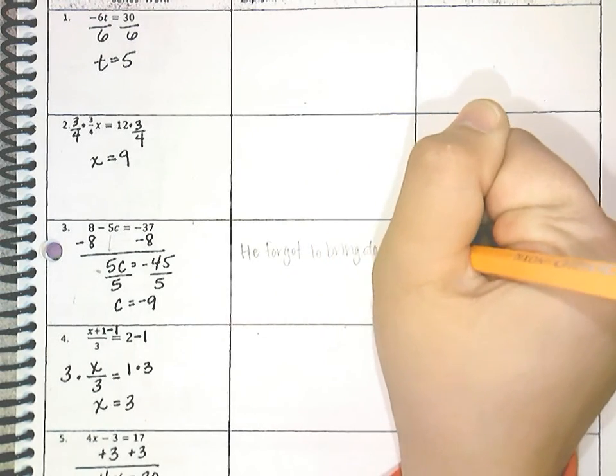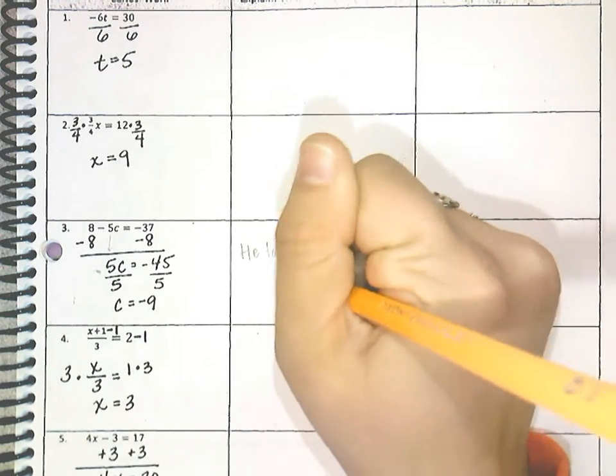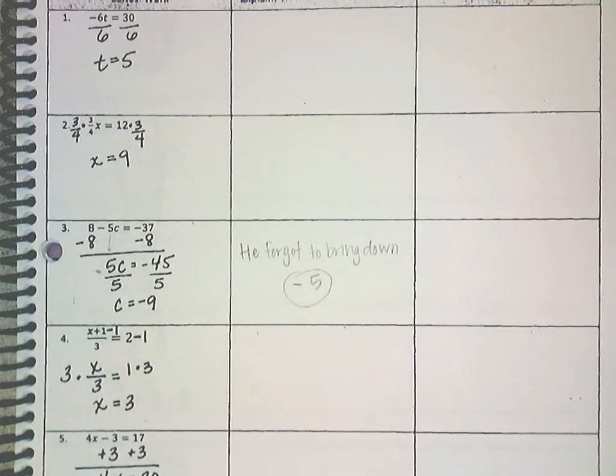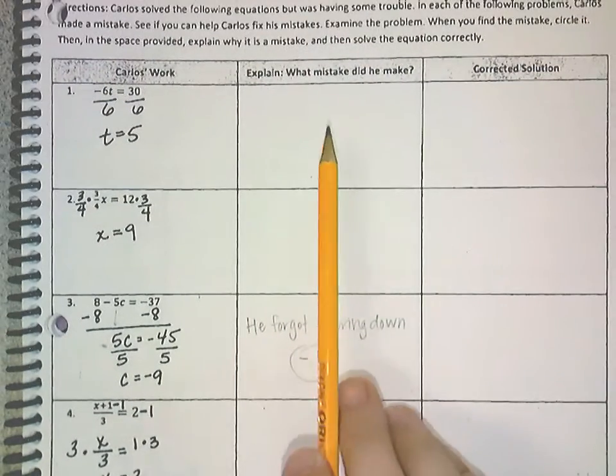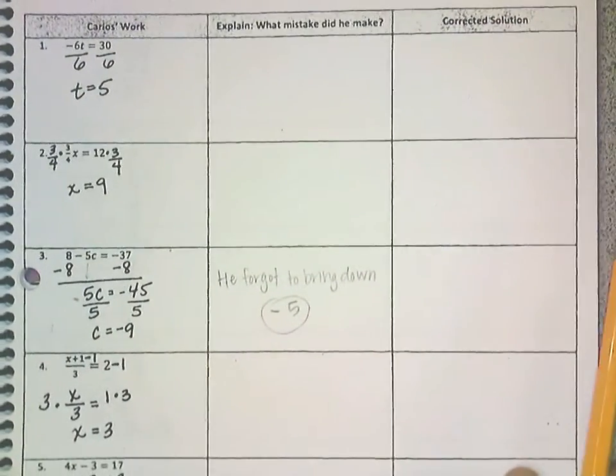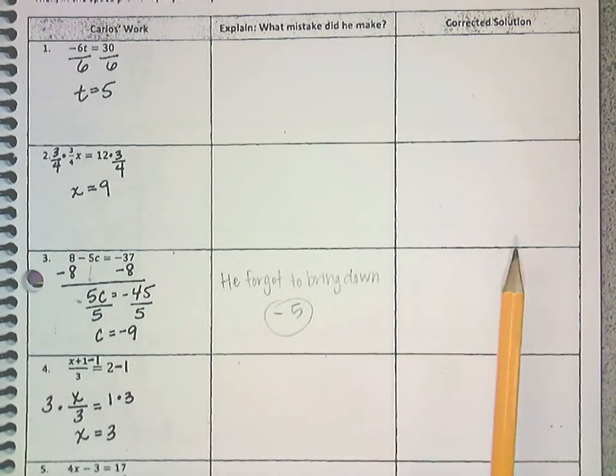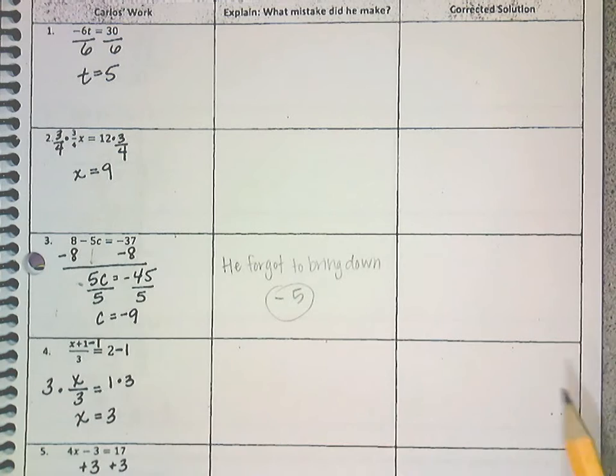to bring down negative 5. Okay, so that's the mistake that he made. That's what this column is asking for. Then on this side, or in this box, we're supposed to do the corrected solution. So I'm just going to rewrite